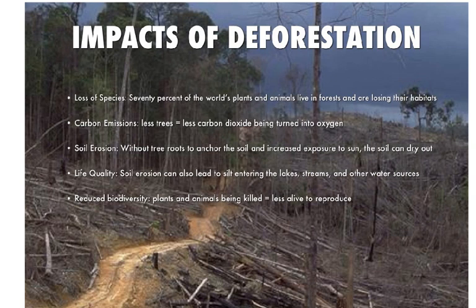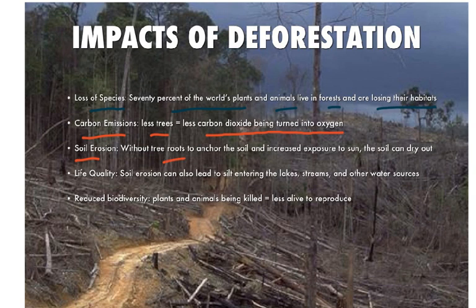What are the impacts of deforestation? Number one is loss of species: 70% of birds, plants, and animals live in forests and are losing their habitats — the birds living in trees, the insects feeding on leaves. Then carbon emission: fewer trees means less carbon dioxide being converted into oxygen. Then soil erosion: without tree roots to anchor the soil, and with increased exposure to sun, the soil can dry out, resulting in soil being lost. Then life quality: soil erosion can lead to silt entering lakes, streams, and other water sources, resulting in flooding.